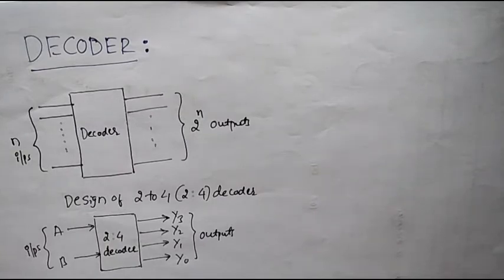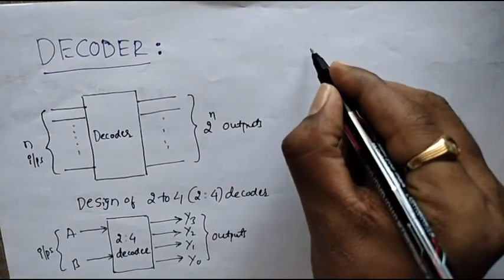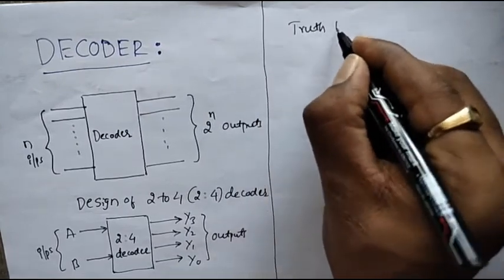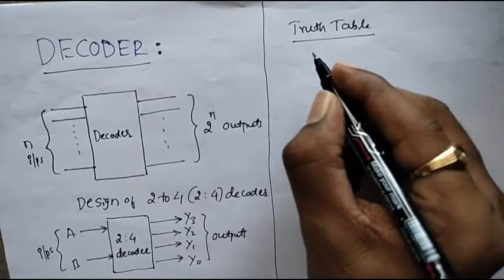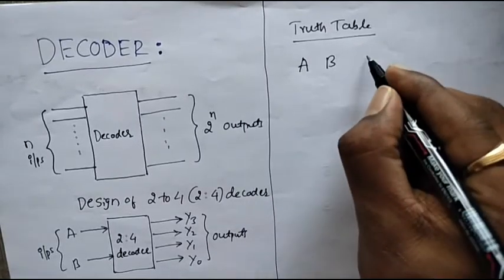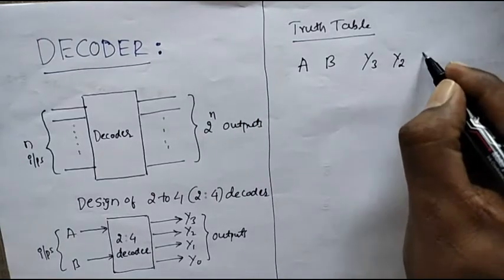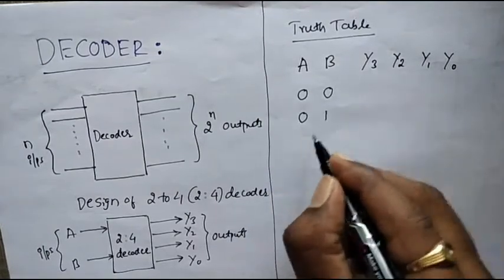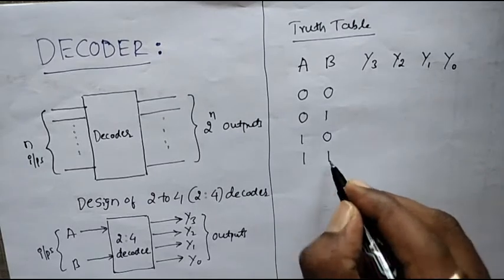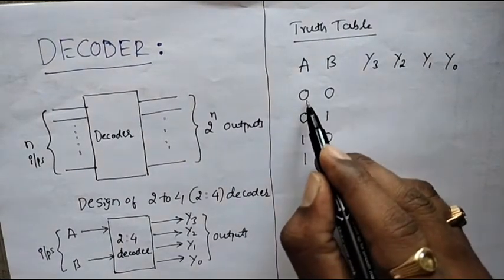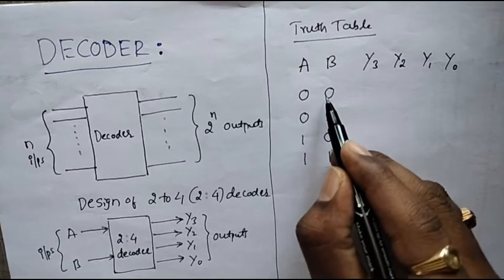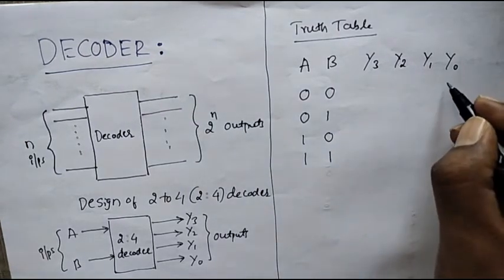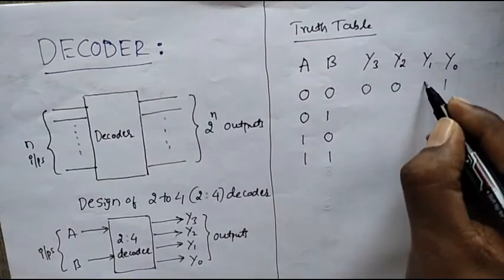Now let us write the truth table for a 2-to-4 decoder. It has 2 inputs A and B, and 4 outputs Y3, Y2, Y1, Y0. The possible inputs are: 0,0 then 0,1 then 1,0 and 1,1. In a decoder, when inputs are 0,0, it will make the Y0 line high and the remaining outputs are 0.